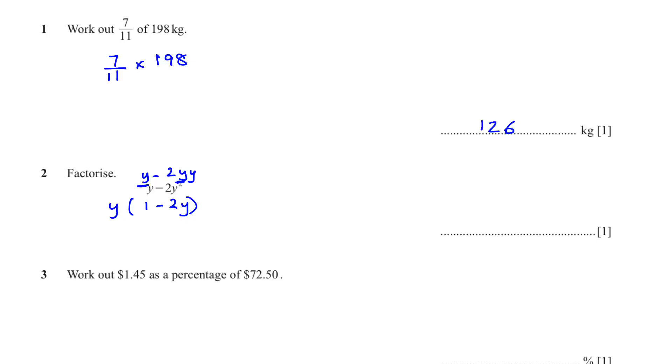Third question, work out 1.45 as a percentage of 72.50. Whenever we have to find a percentage, we multiply by 100. So 1.45 over 72.50 multiplied by 100 is 2 percentage.